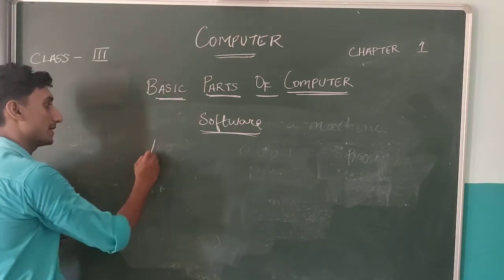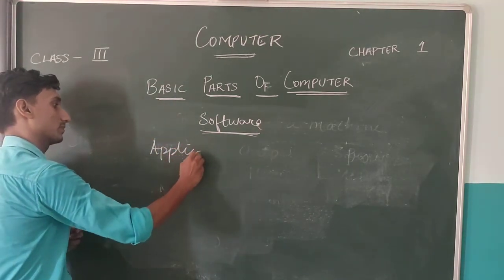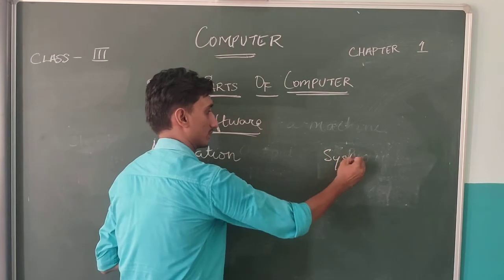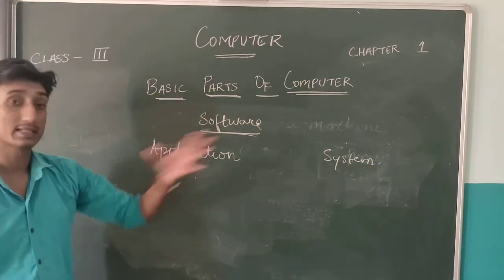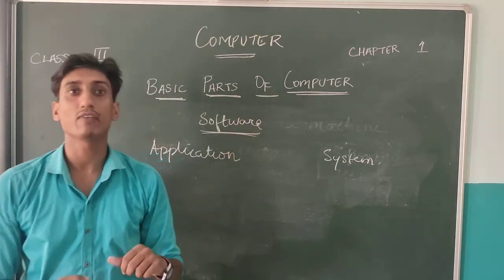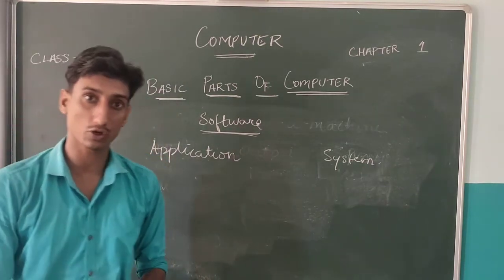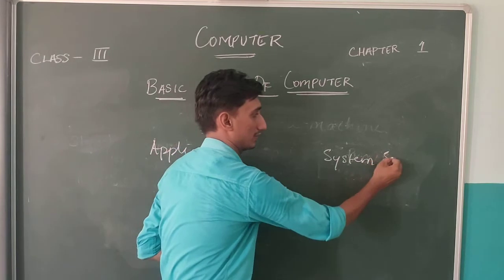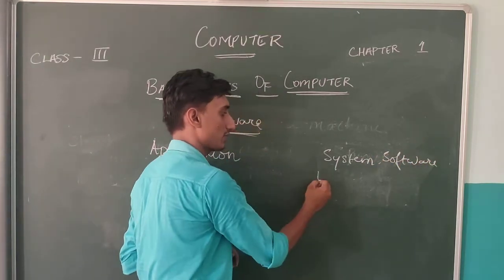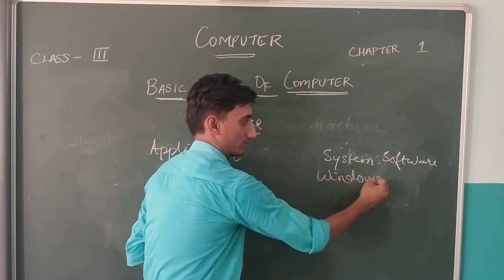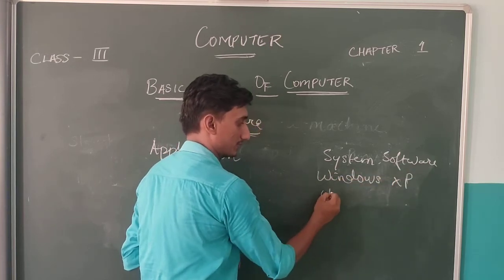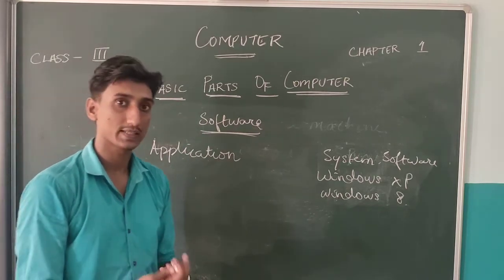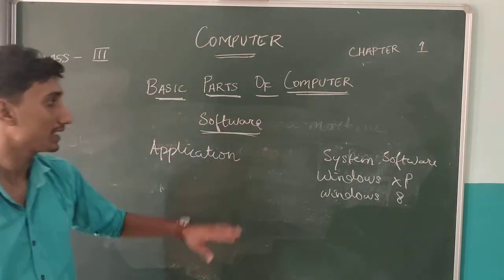Software is of two types. The first is application software and the second is system software. System software examples include Windows XP, Windows 8, Windows 10, Windows Vista, Linux, and Ubuntu.